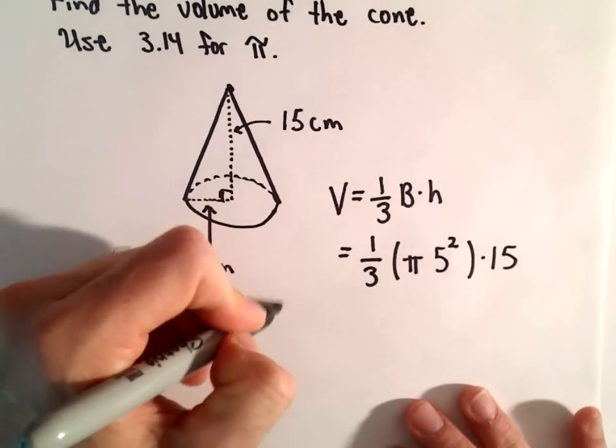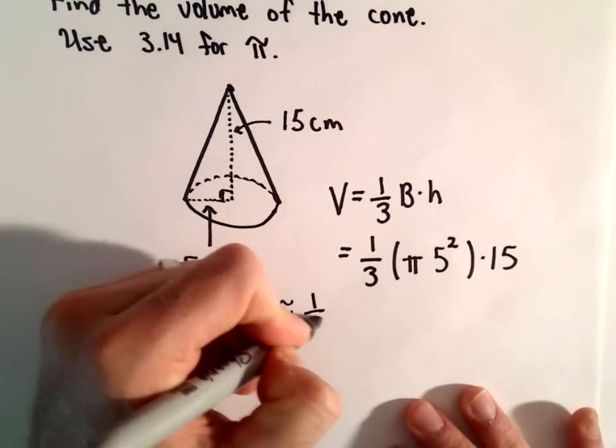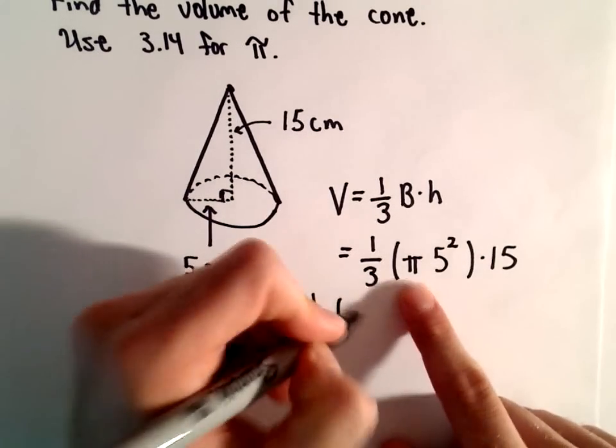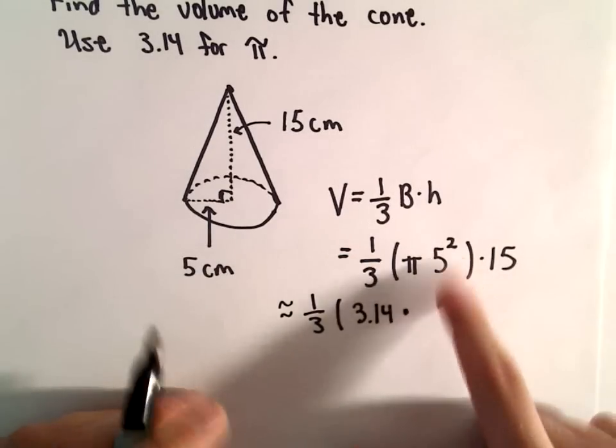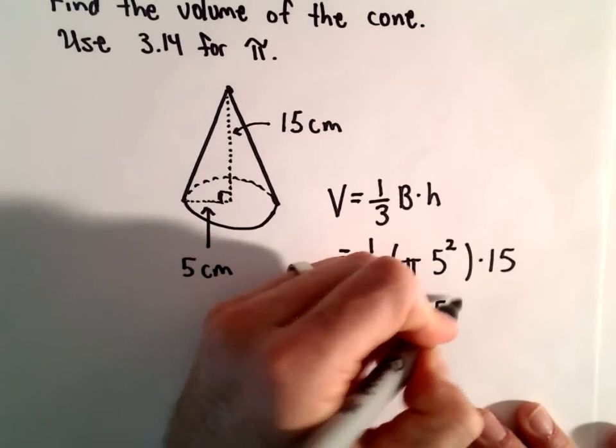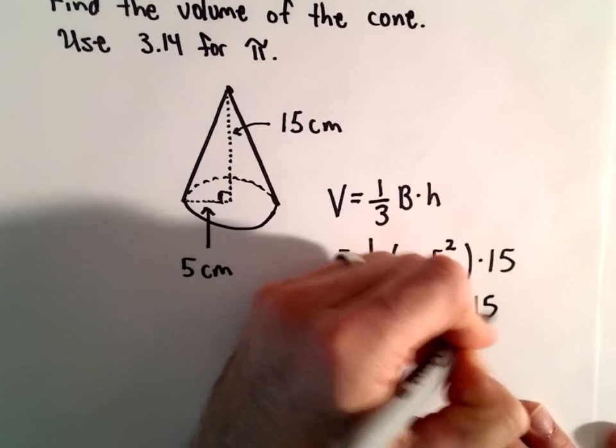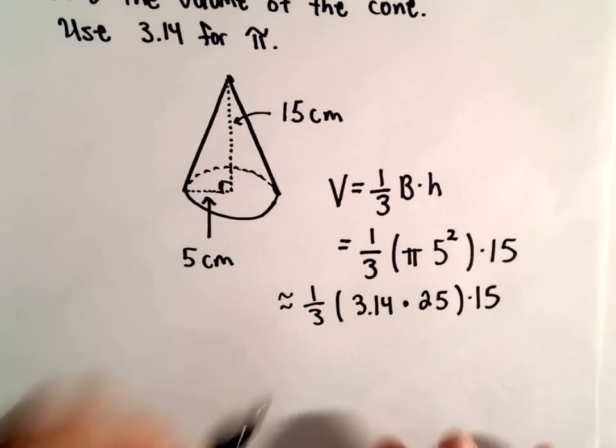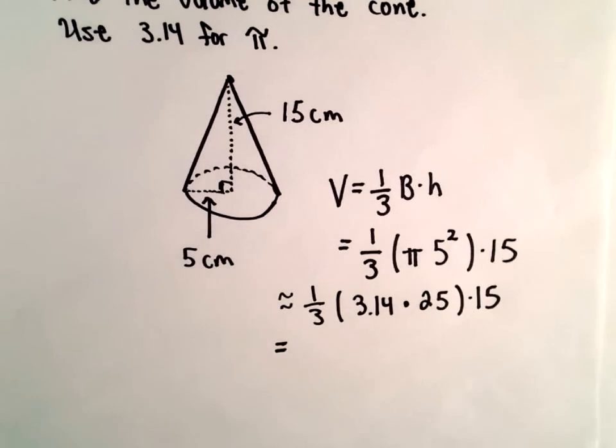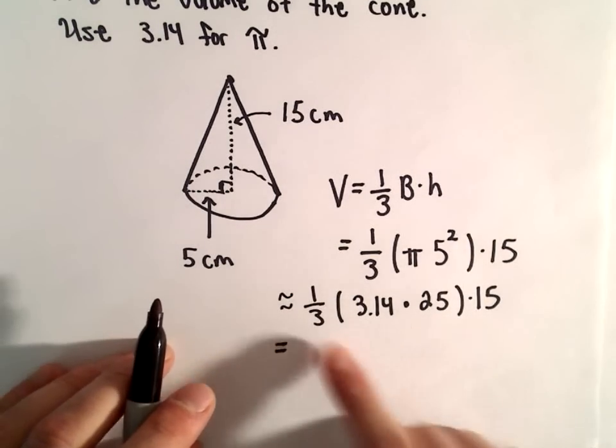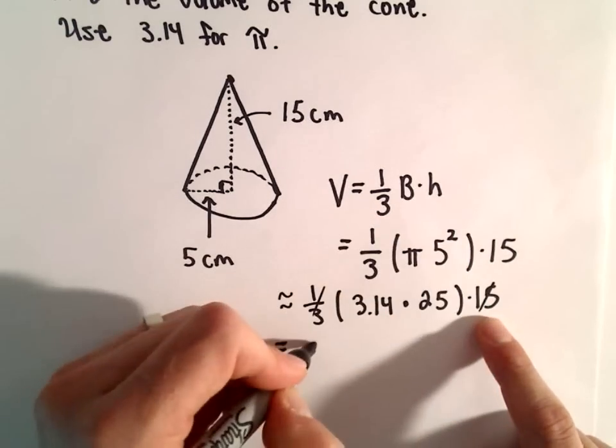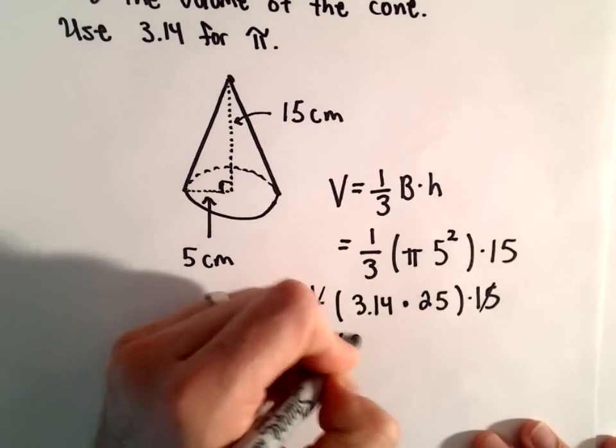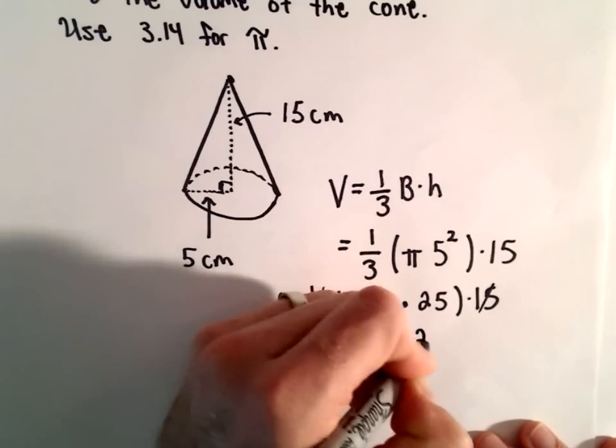Okay, so now I'm going to approximate here. I'm going to replace pi with 3.14. Well, 5 squared will be 25, and then we simply multiply that by 15. So let's see here, one-third of 15 would be 5. You're still multiplying by 3.14 times 25.